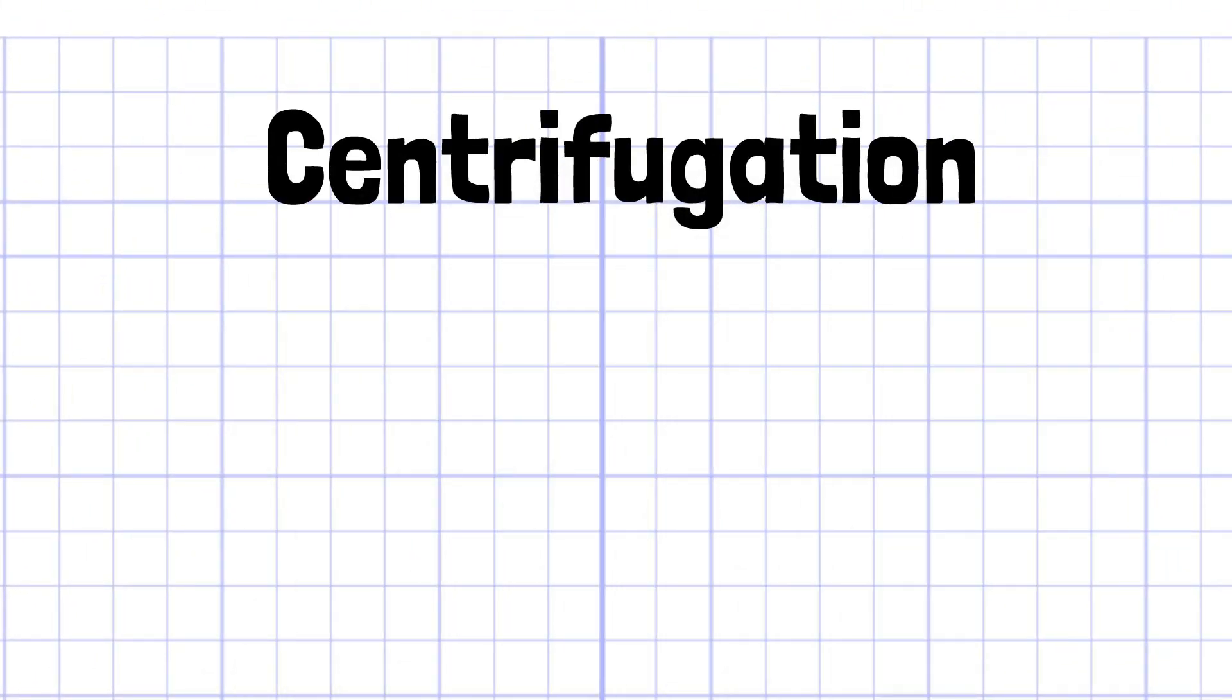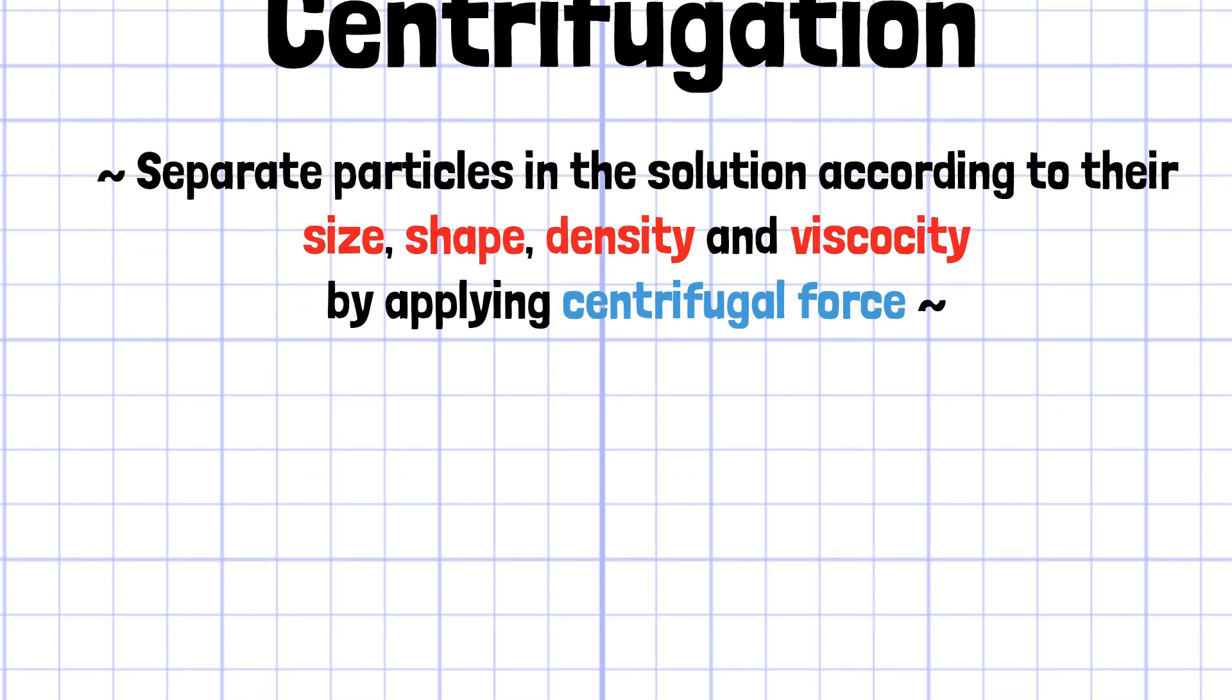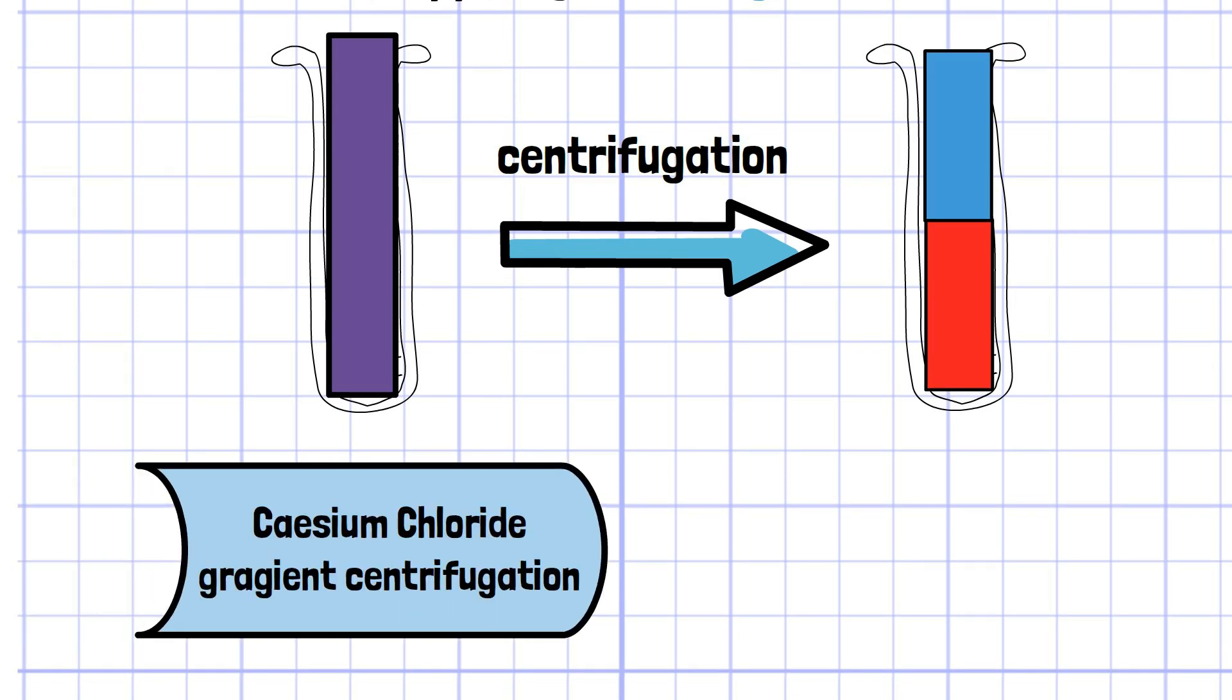First, centrifugation is the technique to separate particles in the solution according to their size, shape, density, and viscosity by applying centrifugal force. This technique made it possible to separate seemingly indistinguishable objects by concentration and mass. And cesium chloride gradient centrifugation is the advanced form of this technique.